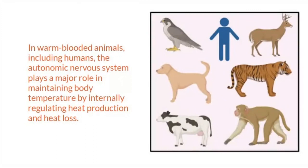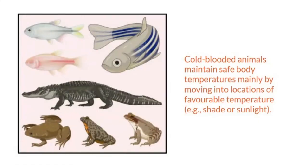Have you seen animals huddling when it's cold? That behavior is to maintain a warm temperature. For cold-blooded animals, they maintain safe body temperatures mainly by moving into locations of favorable temperature, like shade or sunlight. Unlike warm-blooded animals, which regulate their own body temperature internally, cold-blooded animals like snakes move to shady places for cooler temperatures.